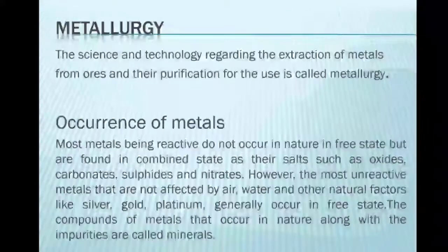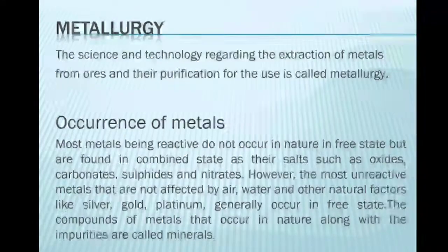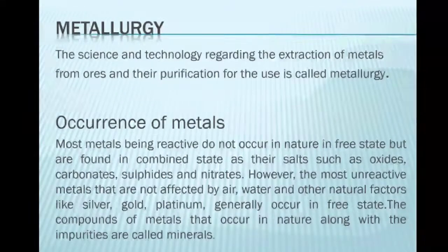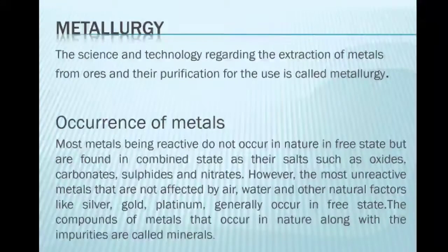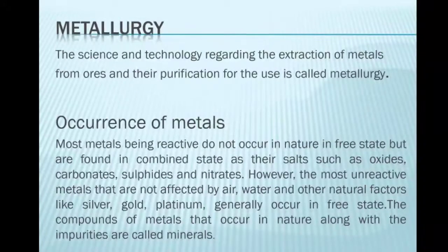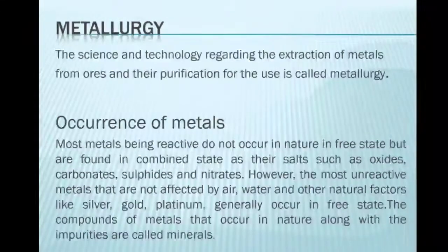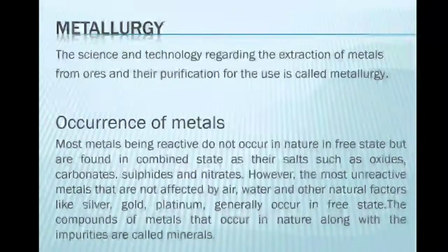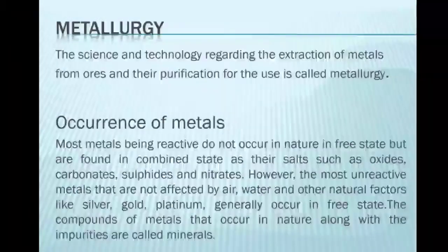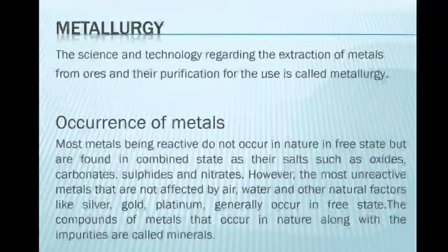The compounds of metals that occur in nature along with impurities are called minerals. The minerals from which the metal can be separated economically are called ores. Ores contain many types of impurities such as soil, sand and rocky substances along with the metal compounds. These impurities are called gang.